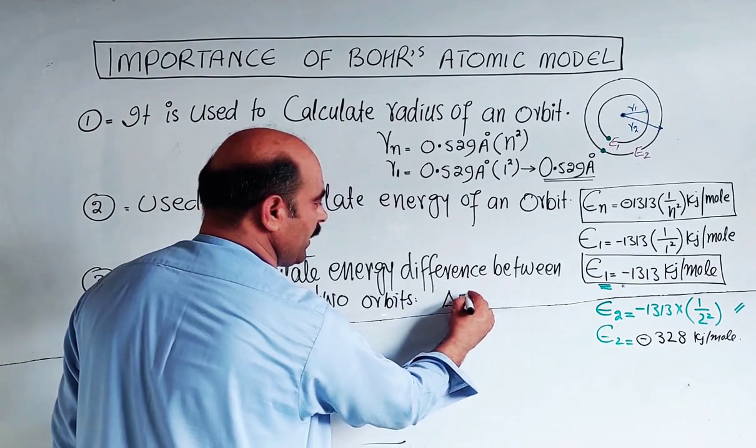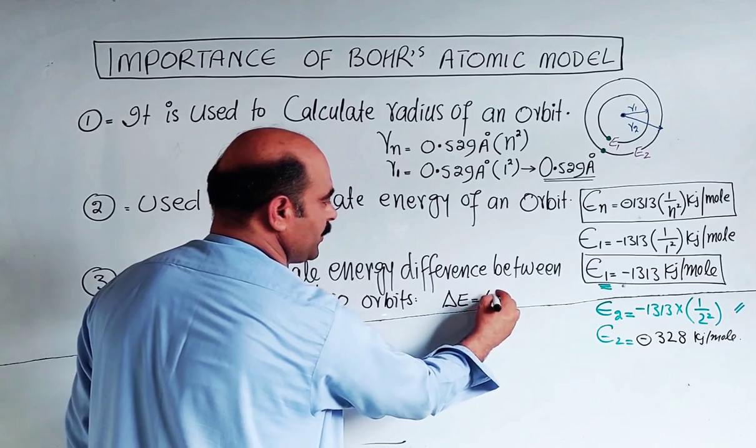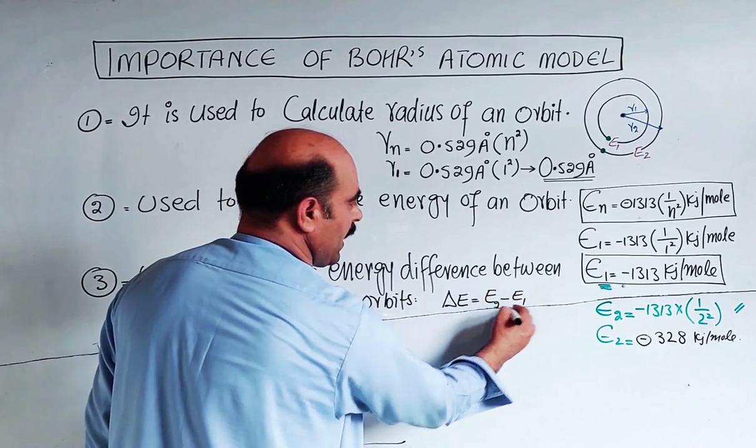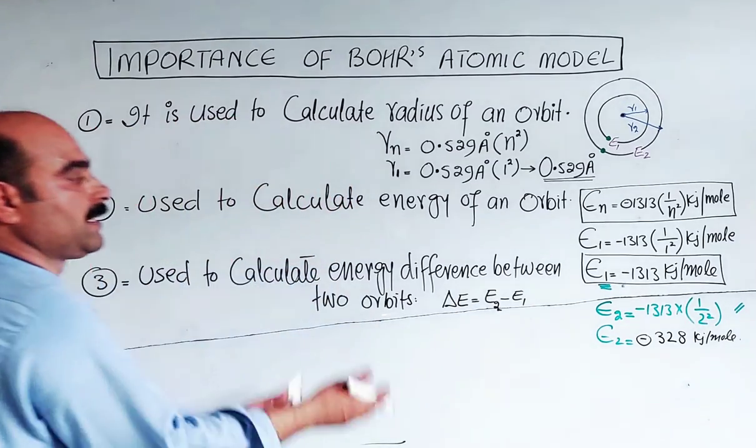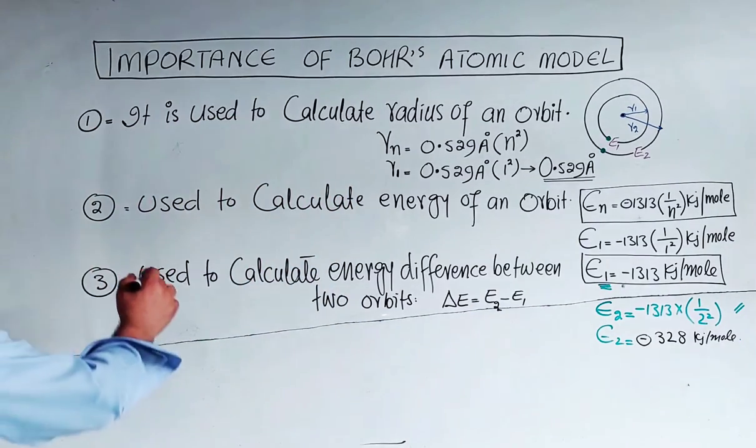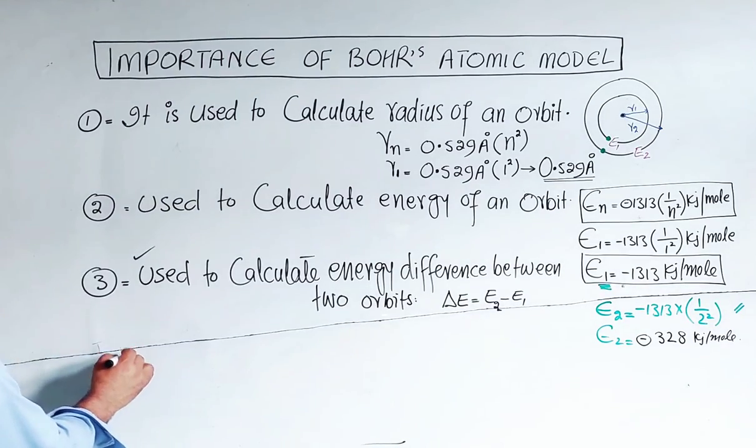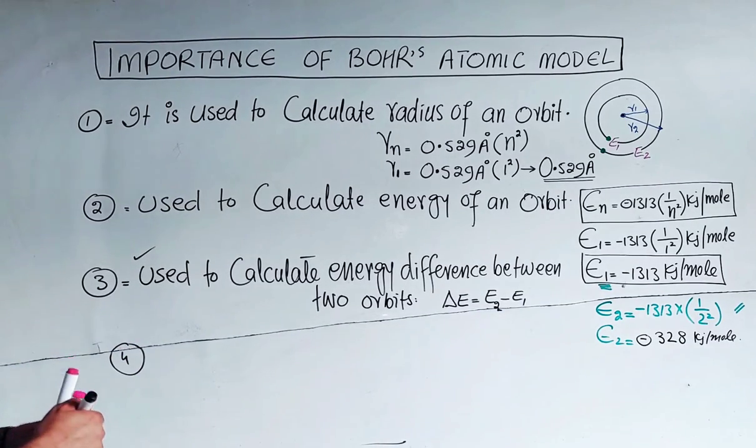Delta E, the energy difference between two orbits, equals E_2 minus E_1. The higher orbit energy minus the lower orbit energy. That's the formula. Clear?